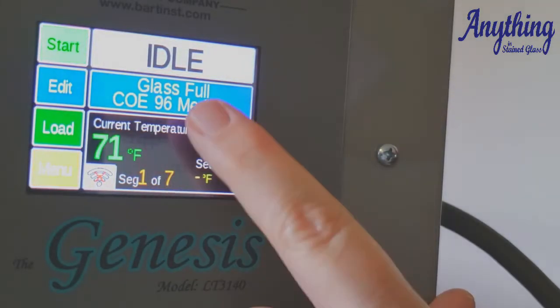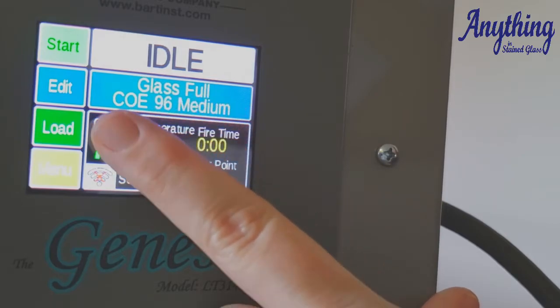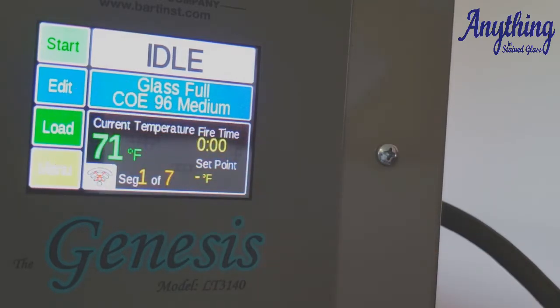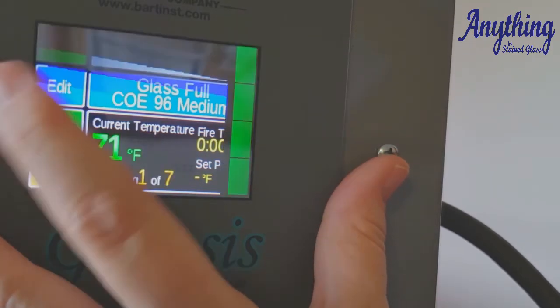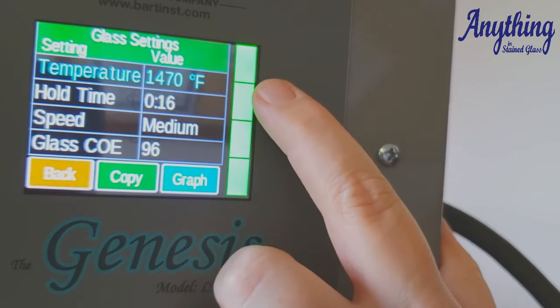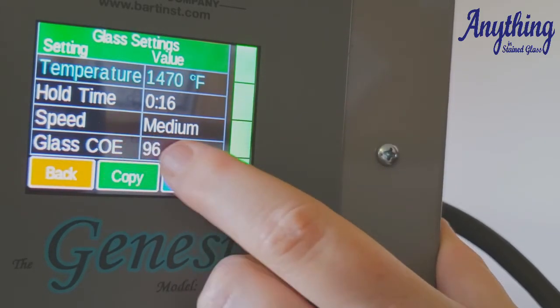The program gets loaded. You see here, it says it's glass full fuse for COE 96 in a medium speed. Well, let's say you tell me, but I don't use COE 96, I use COE 90. So we're going to go in here and edit, and you have the opportunity to edit all of your different features of it.